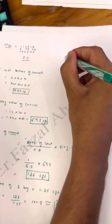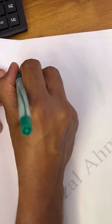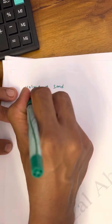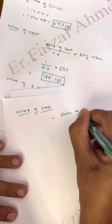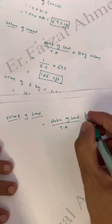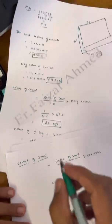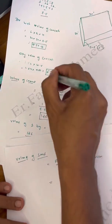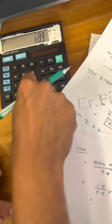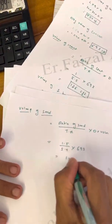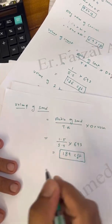Now volume of sand: ratio of sand divided by total ratio, into dry volume. The ratio of sand is 1.5, total ratio is 5.5, and dry volume of concrete is 693 cft. So volume of sand = 1.5 × 693 / 5.5 = 189 cft of sand or fine aggregate required.